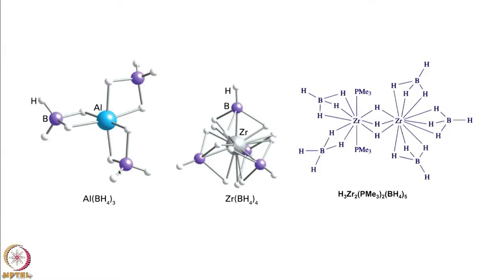For example, Al(BH3)3, in which two hydrogen atoms are acting as bridging and two are terminal, so aluminum is octahedrally surrounded by six hydrogen atoms. Similarly, we have tetrakis(borohydride)zirconium, where zirconium is surrounded by eight hydrogen atoms at the center of an anti-square prismatic geometry. One can also see zirconium having as many as eight coordination sites — a couple of them are trimethylphosphine and the rest are tri-bridging boron hydrides.